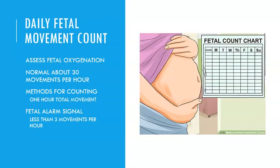When talking about specific testing for high-risk women, the first test is easy to do at home: the daily fetal kick count or daily fetal movement count. Women sit down for about half an hour to an hour and feel for how many times they feel baby movements. Normal movements are about 30 movements per hour. The alarm sign is when they feel less than three movements in an hour — that is concerning. It might just be the baby sleeping, so the provider may have her drink juice or walk around to stimulate the baby. If it doesn't change after that, further evaluation is done.